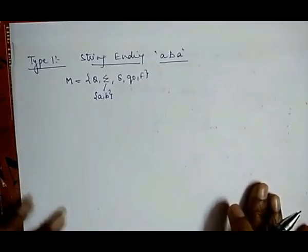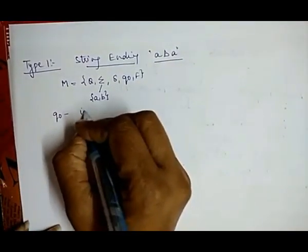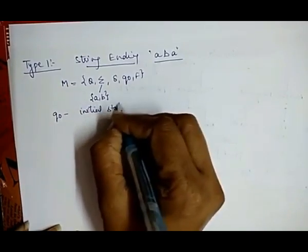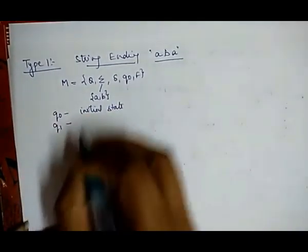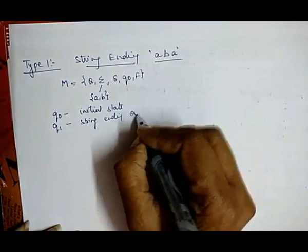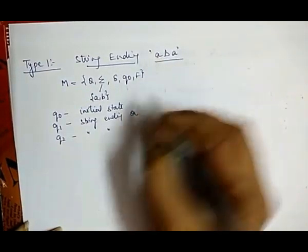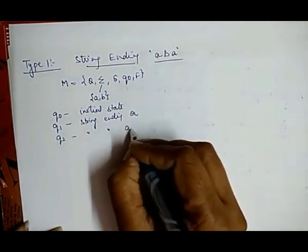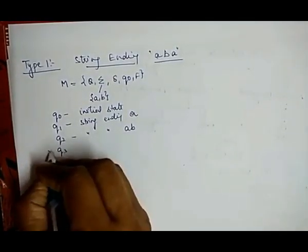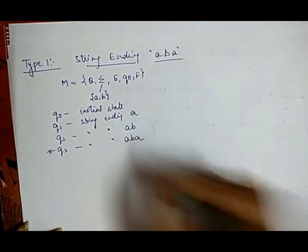For this type of question, we assume the initial state Q₀, then Q1 as the state for strings ending with the first value A. Next, Q2 represents strings ending with AB. The third state Q3, which is the final state, represents strings ending with ABA. Now we create a transition table based on these assumptions using inputs A and B.